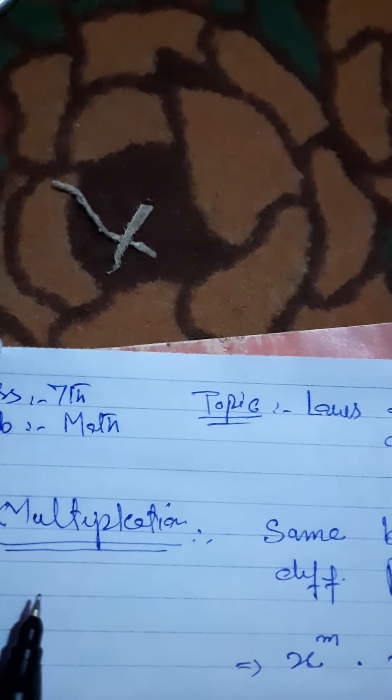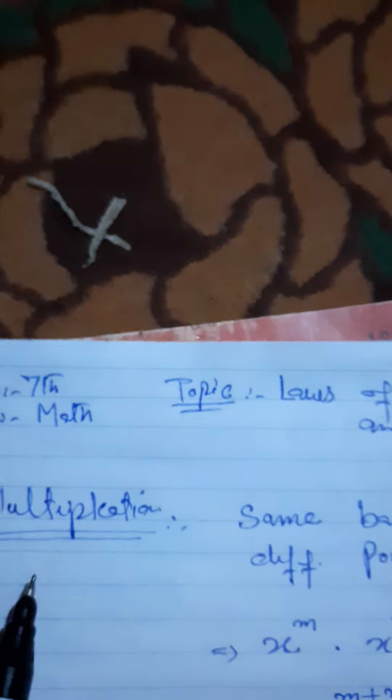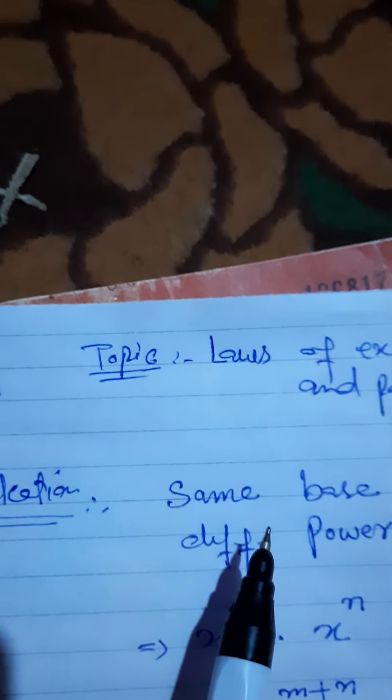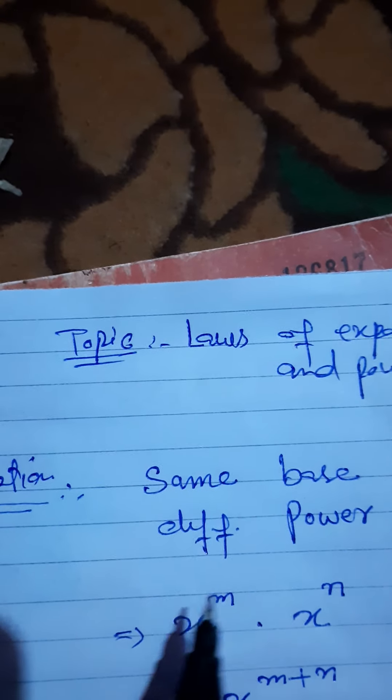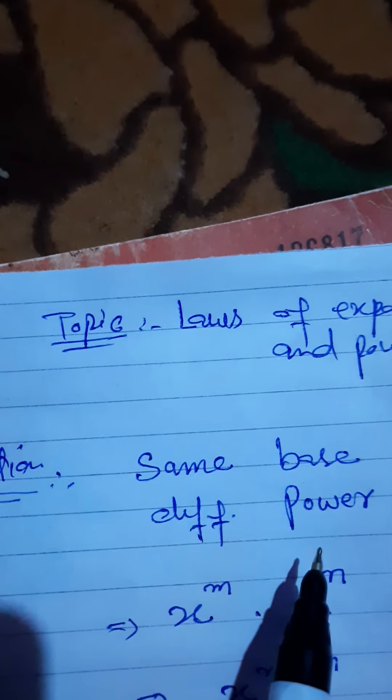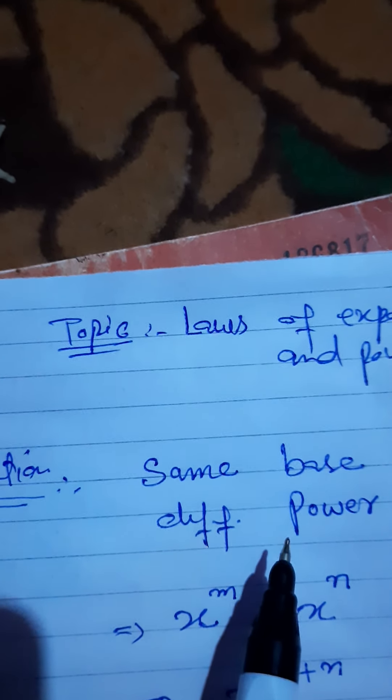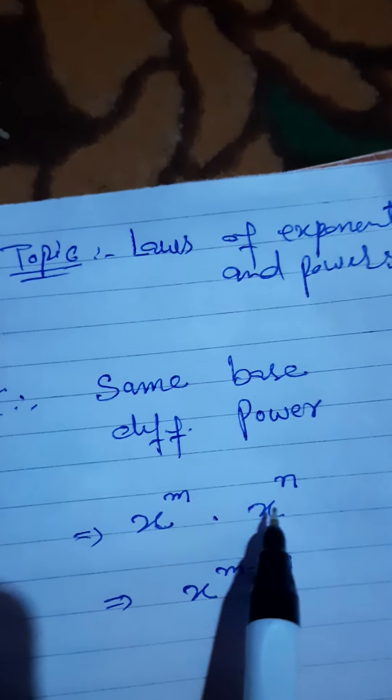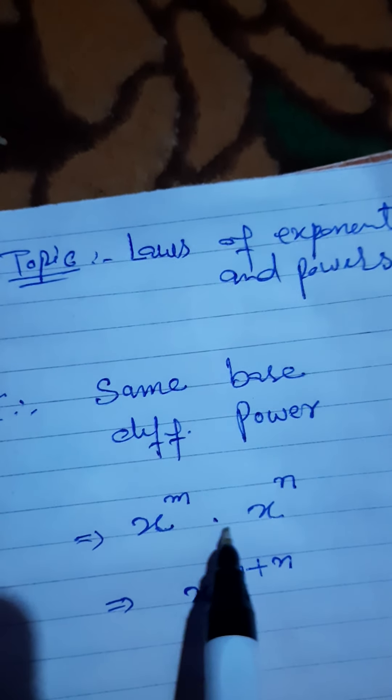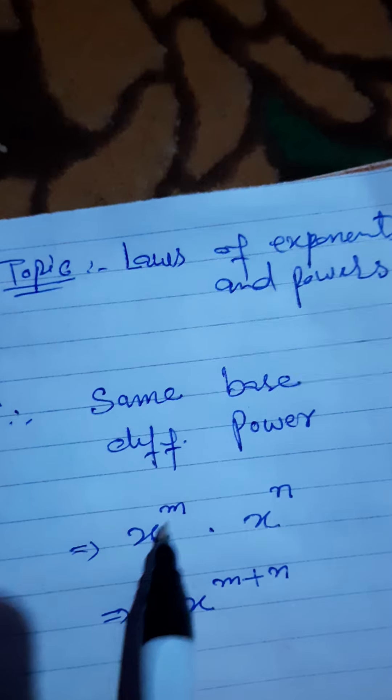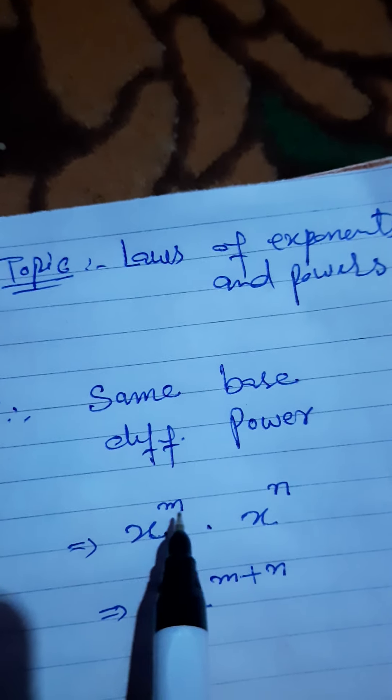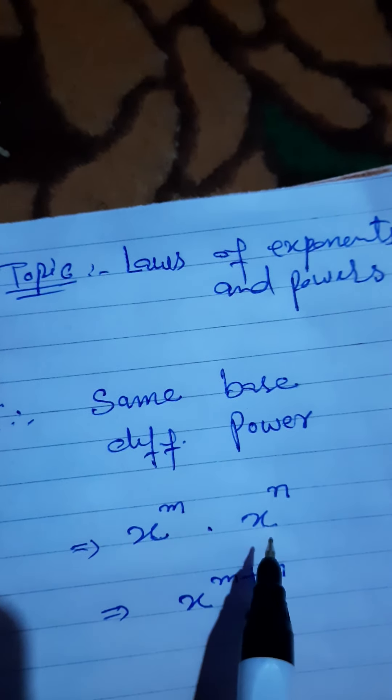In multiplication, when we have the same base but different powers, we add the powers together. For example, with the same base and different powers, we multiply by adding the exponents.